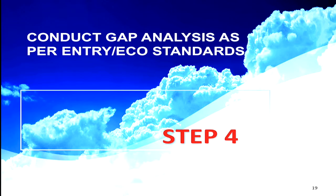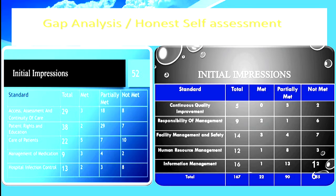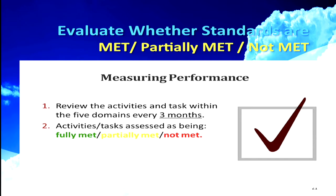Step four is to conduct a gap analysis, depending on whether you are using entry or the ECO standards. This will be done chapter by chapter. On the left side are mostly the clinical chapters and on the right side are the management-related chapters. You have to do a very honest self-assessment to know where you stand — measuring whether each standard is totally met, partially met, or not met.